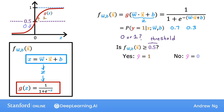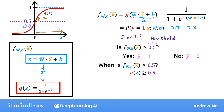Let's dive deeper into when the model would predict 1 — in other words, when is f of x greater than or equal to 0.5? Recall that f of x is just equal to g of z, so f is greater than or equal to 0.5 whenever g of z is greater than or equal to 0.5. Looking at the sigmoid function, g of z is greater than or equal to 0.5 whenever z is greater than or equal to 0 — that is, whenever z is on the right half of the axis. And z is equal to w dot x plus b, so z is greater than or equal to 0 whenever w dot x plus b is greater than or equal to 0.